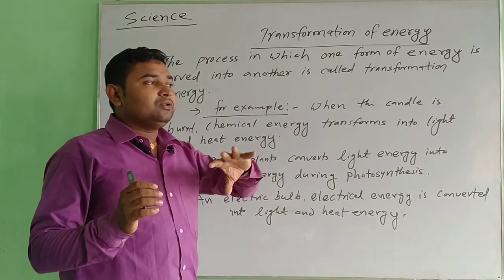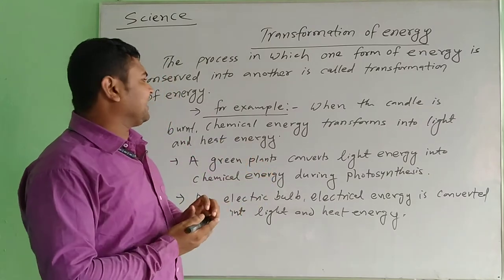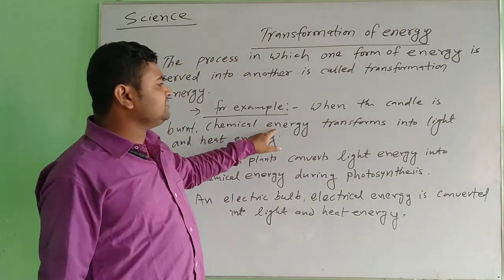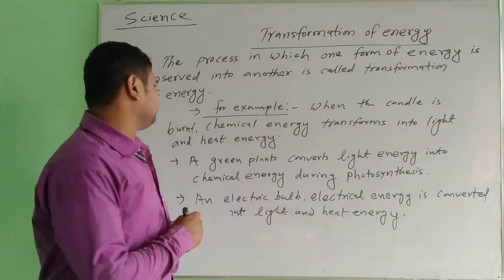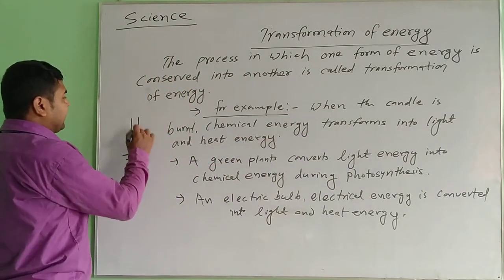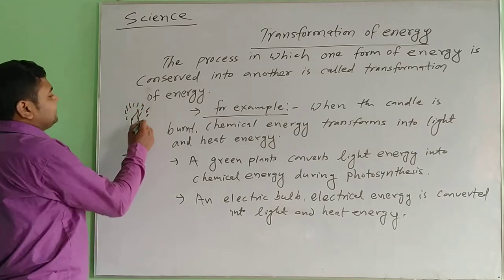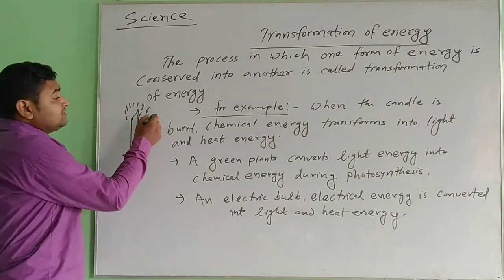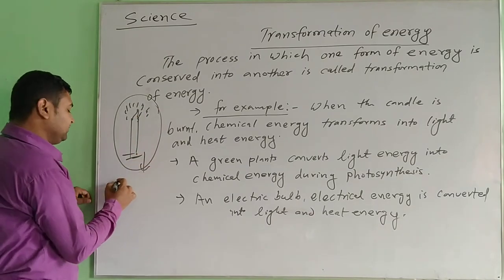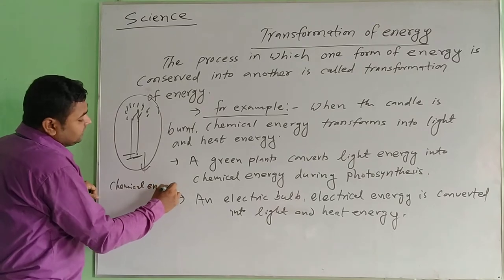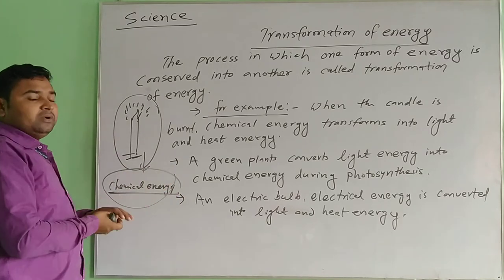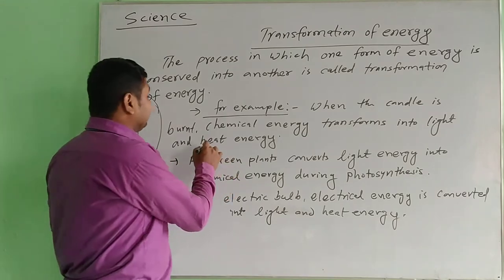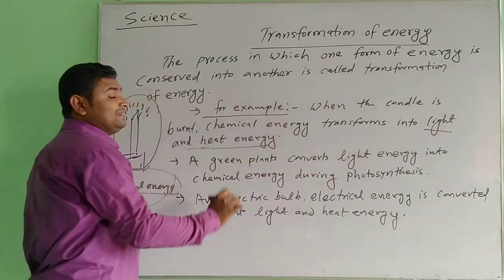Take one example. When a candle burns, it possesses chemical energy. When it burns, this chemical energy transforms into heat and light energy. So chemical energy is converted into heat and light energy — that is transformation of energy.